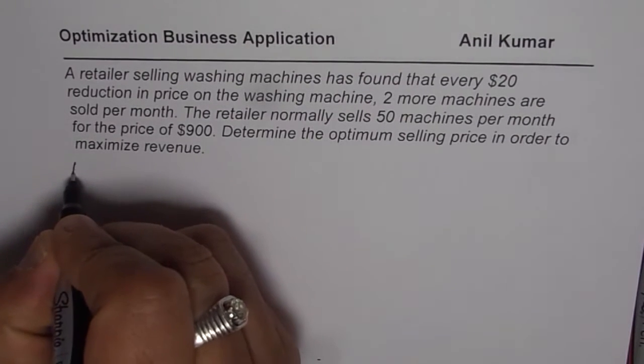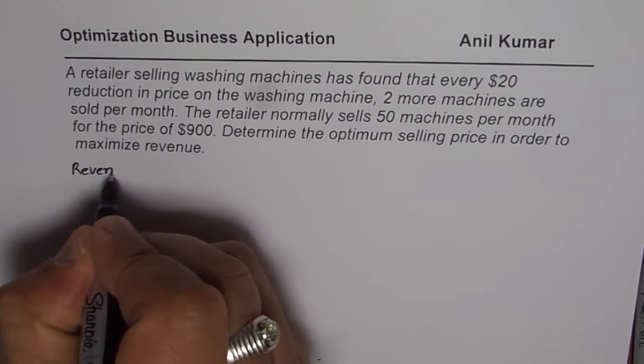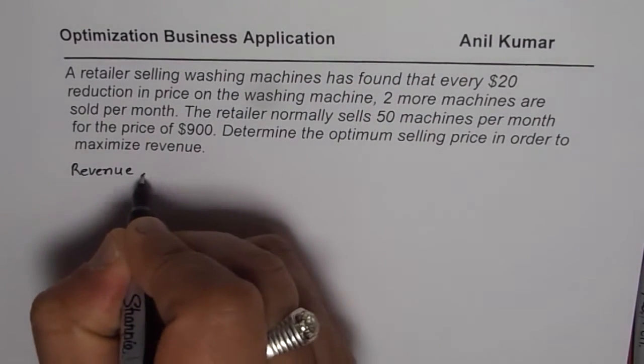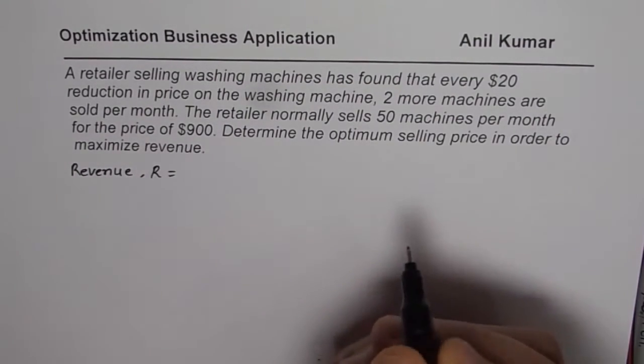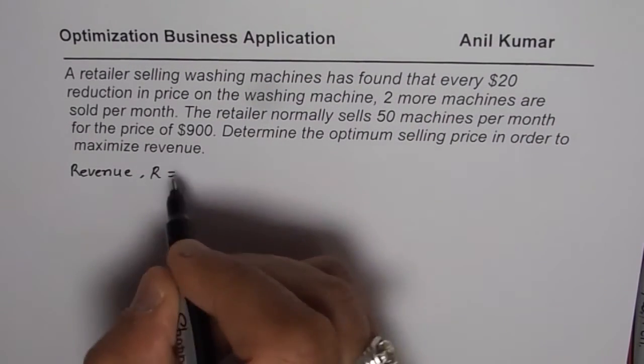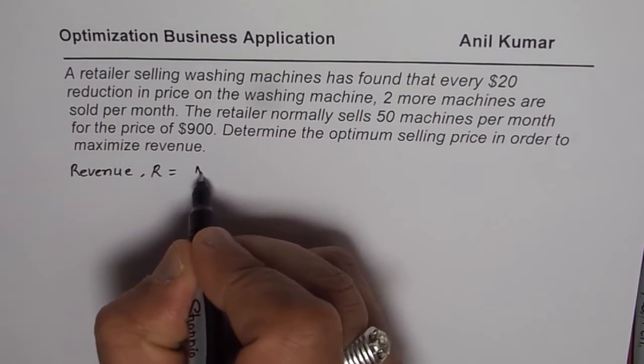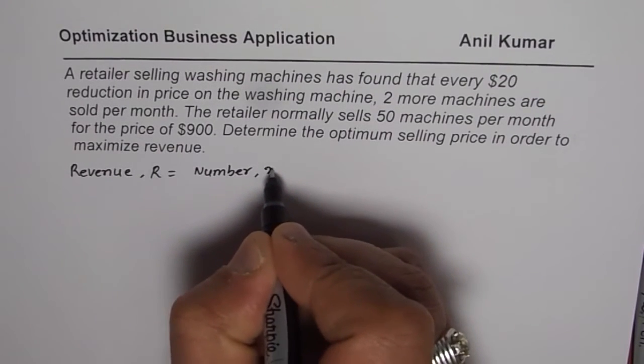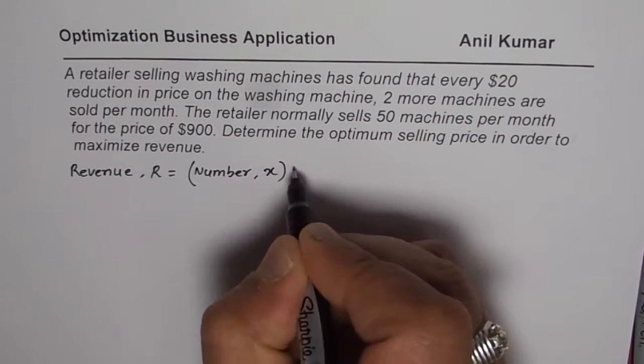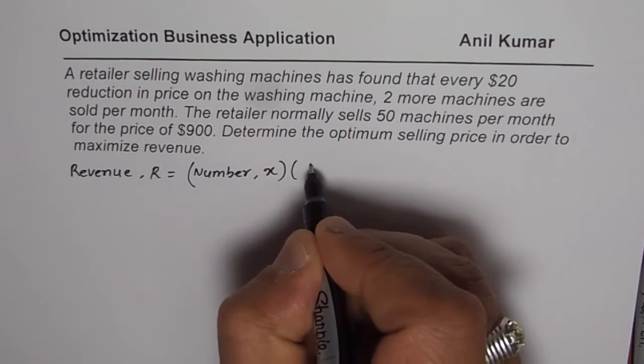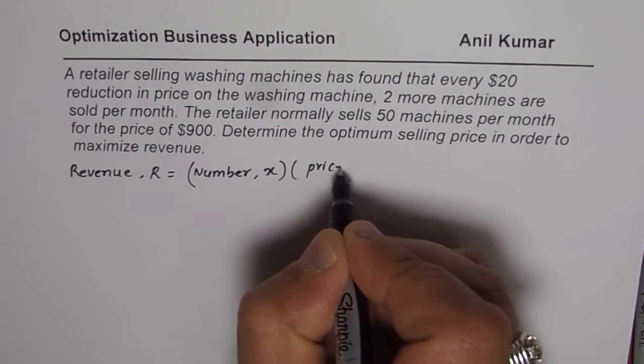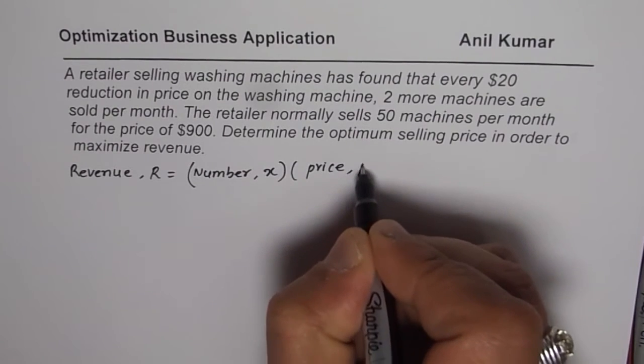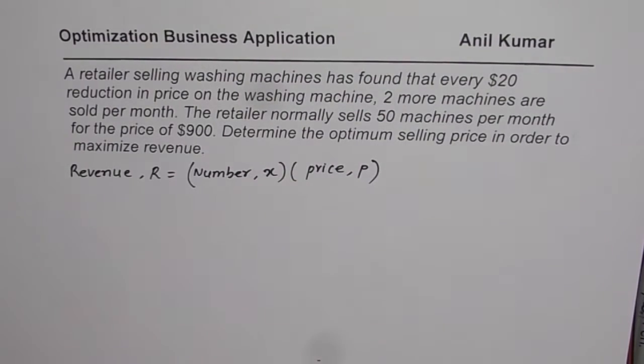As you know, revenue R is equals to number of machines sold and their price. So it is equals to number of machines X times unit price, price P of each. That is how we can define our variable.